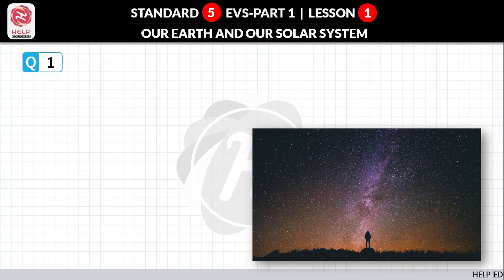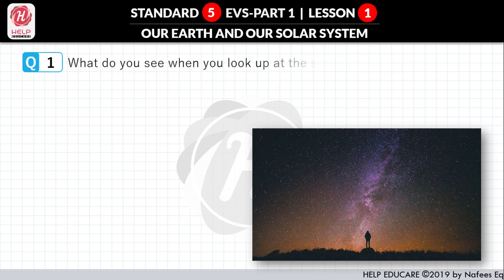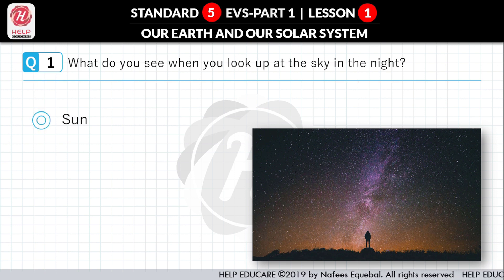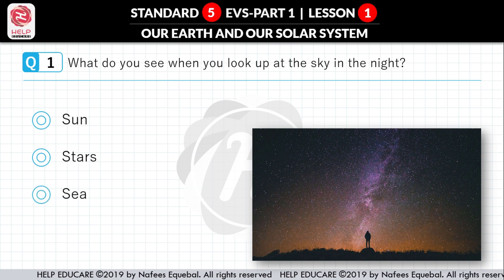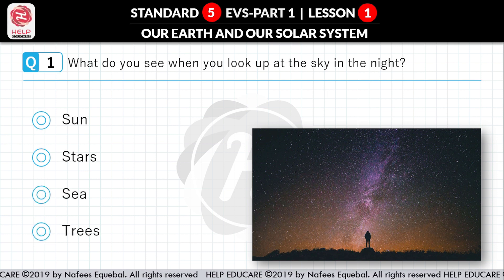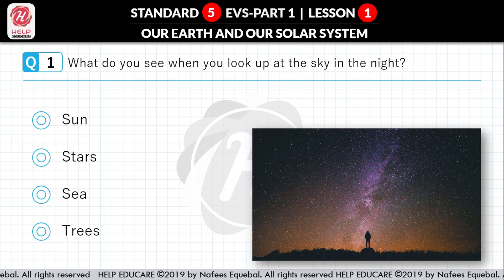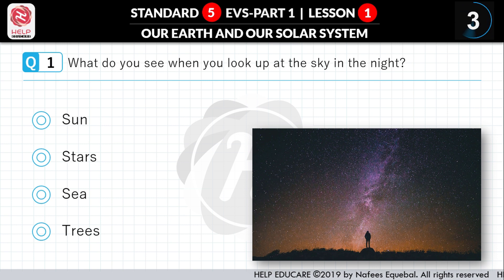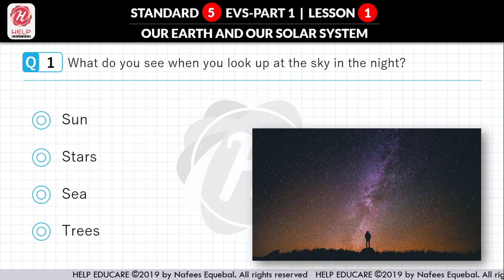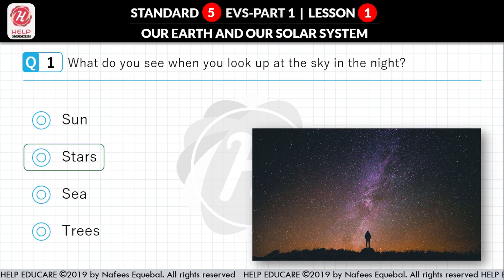Question No. 1: What do you see when you look up at the sky in the night? First option: Sun. Second option: Stars. Third option: Sea. Fourth option: Trees. Correct answer is Stars.